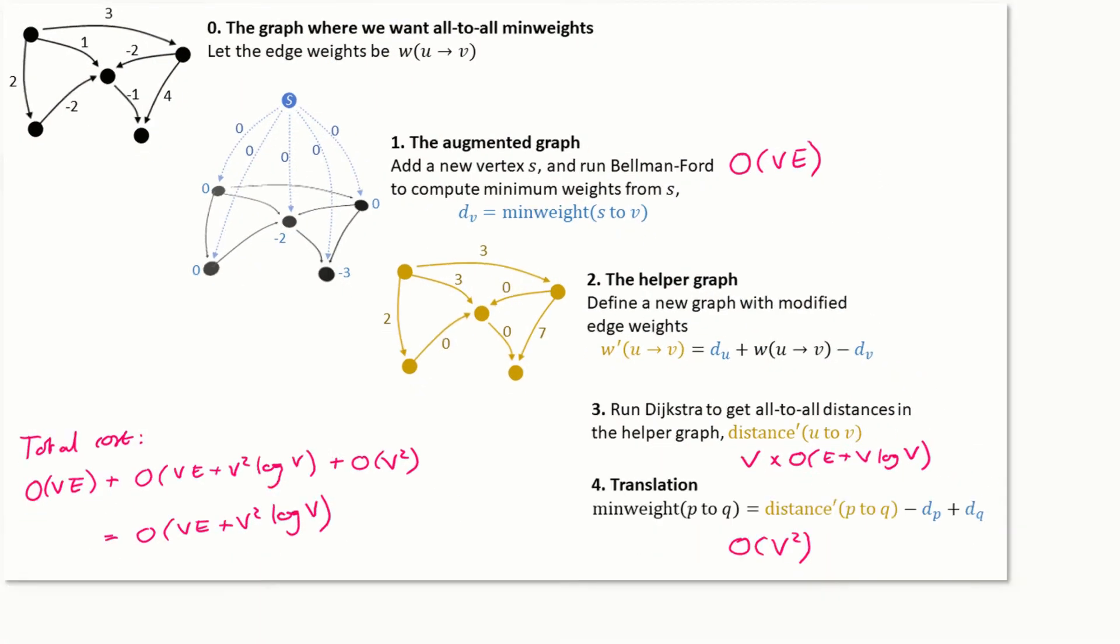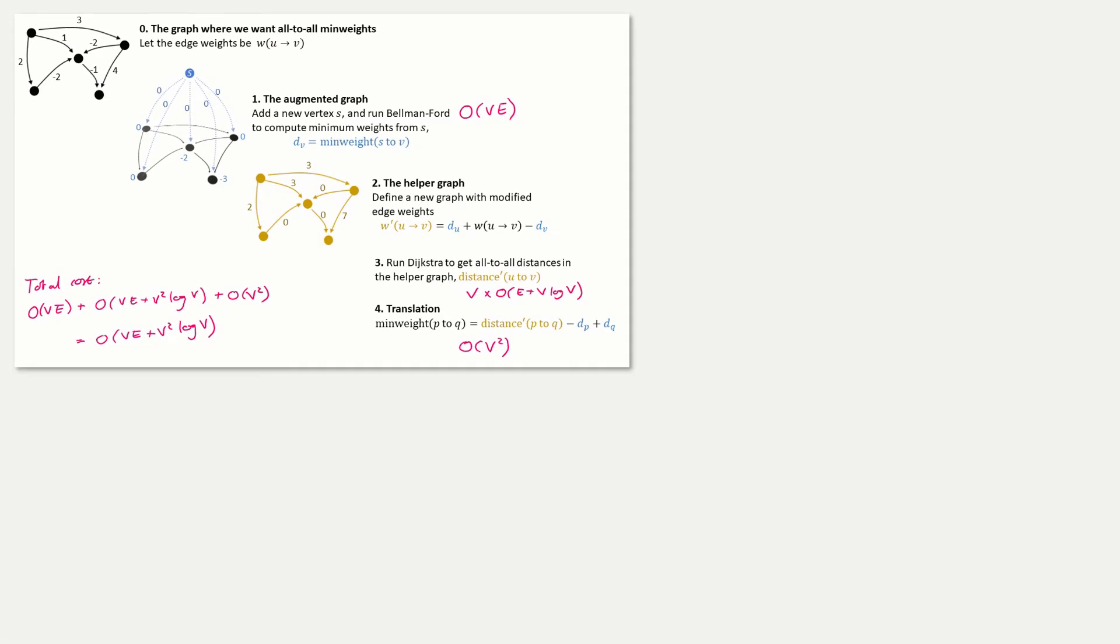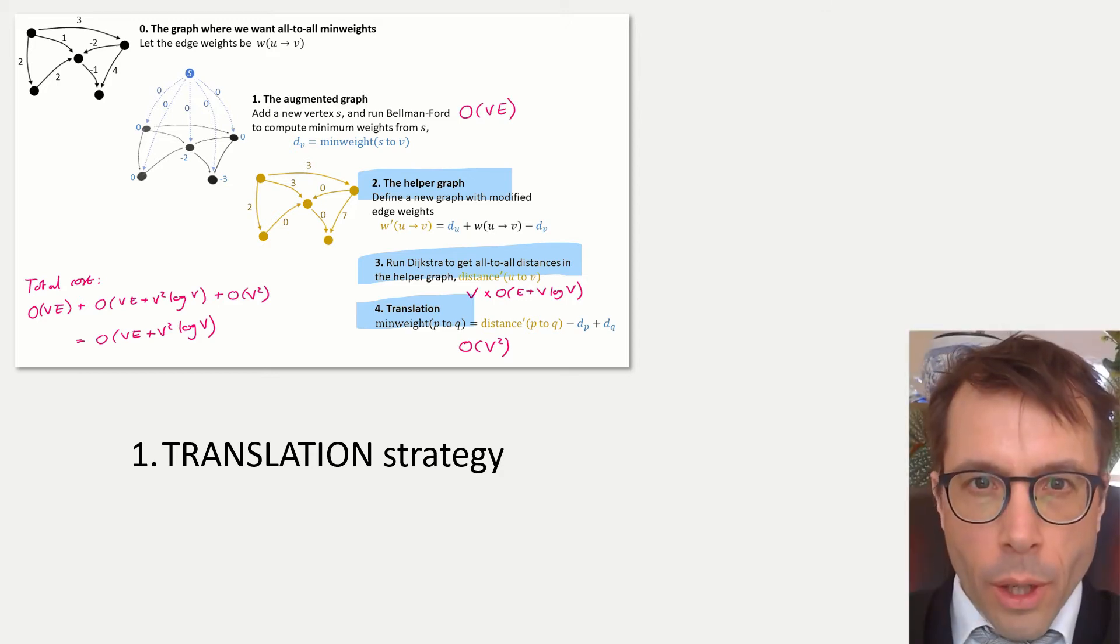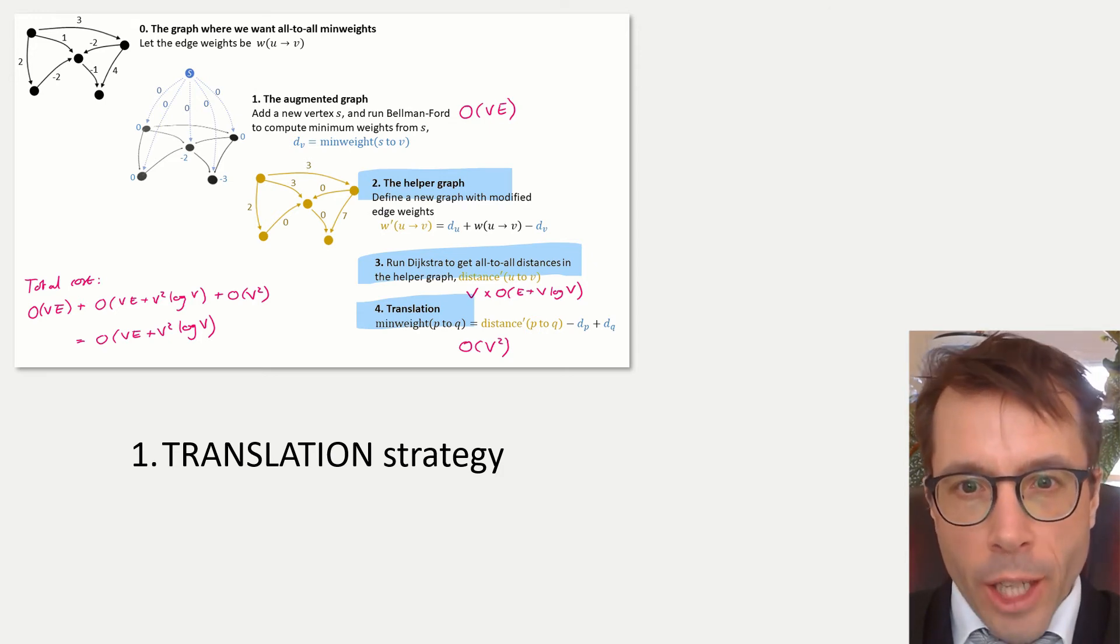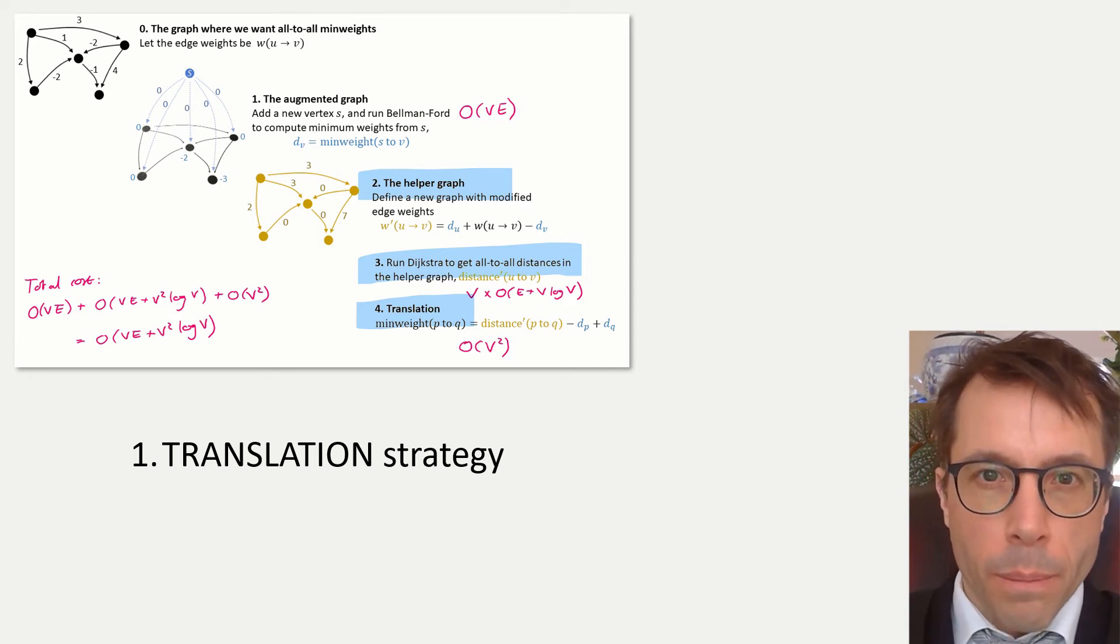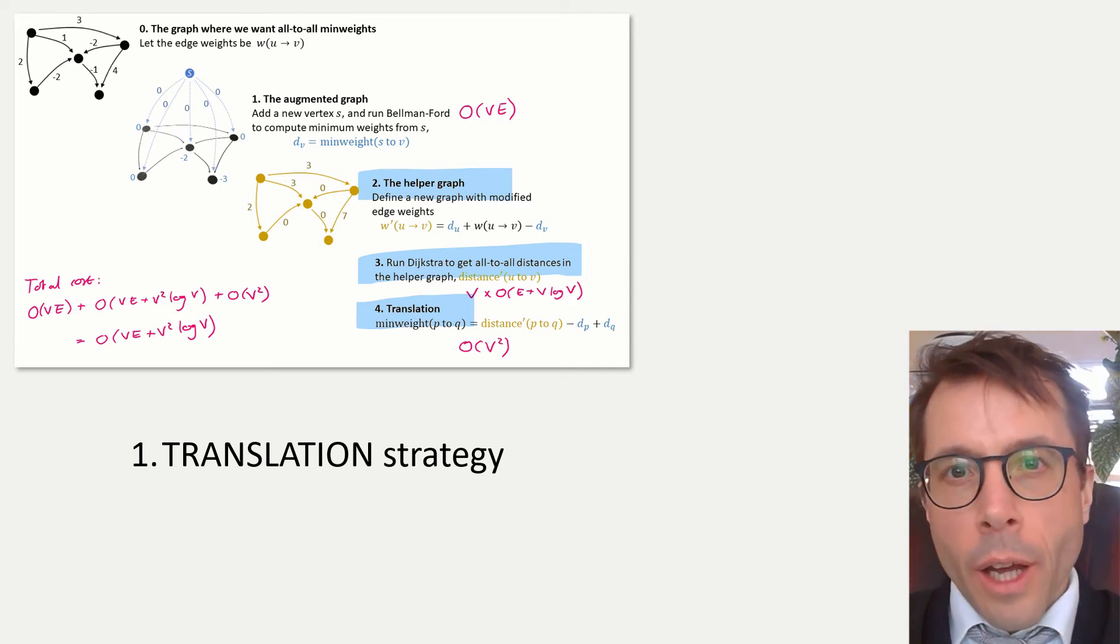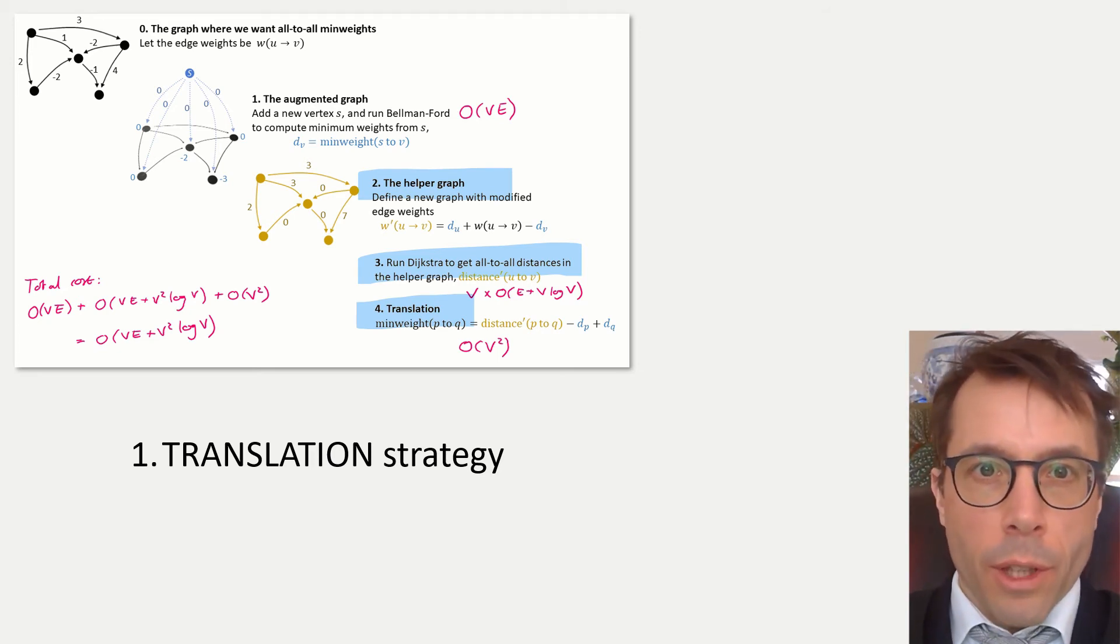Now let's highlight the two big ideas behind it. Idea number one: the translation strategy. What this means is that we create a helper problem of some sort, find the solution to the helper problem, and then we translate that solution back into our original problem. Ideally the helper problem is easier, or maybe you just have a library routine for it kicking around somewhere and you want to save time programming, or maybe you know some theorems about the helper problem which you think might be useful.